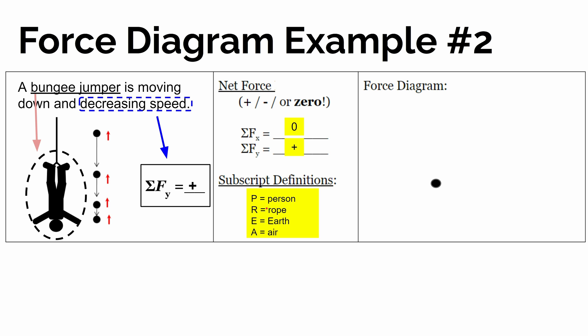So let's define our subscripts. P will represent the person or the bungee jumper. R is going to be the rope or the elastic material. E is the earth, and A is going to be air.